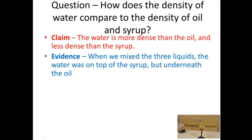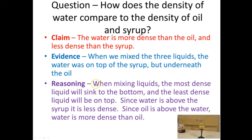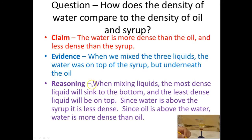This is why you have to have reasoning — to show that you understand that this evidence proves this to be true. Typically, your reasoning could be a little bit longer than the claim or the evidence, but it shows what you really know. Here's the scientific principle: when mixing liquids, the most dense liquid will sink to the bottom and the least dense liquid will be on top. Now, how do we connect the scientific principle to our evidence and our claim? Since water is above the syrup, water is less dense. And since oil is above the water, the oil is less dense. This explanation includes the scientific principle about density to explain how this evidence results in this claim.